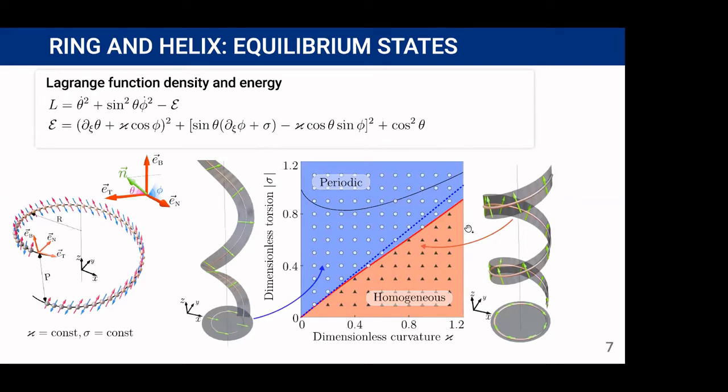By comparing the energies of these both states we determine the energetically preferable states for particular curvature and torsion. On this diagram we can see that homogeneous state is more energetically preferable for helix with curvature relatively larger than torsion and periodic state vice versa. The red solid line corresponds to the phase boundary between states. Dashed blue line determines the asymptotic phase boundary in case of small curvatures. And solid black line determines the region of linear stability of homogeneous state. So in the region of geometric parameters between the black and red lines the homogeneous state is metastable.